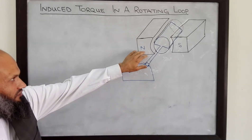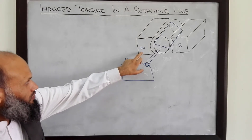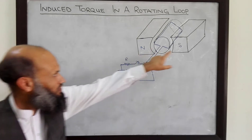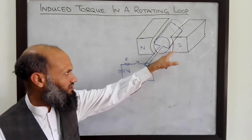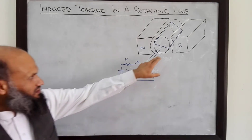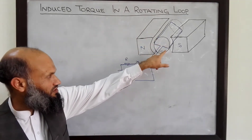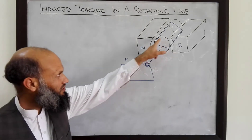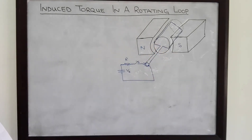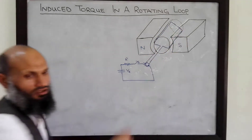This arrangement consists of a magnetic field created by curved poles. Here is the north pole and south pole. The pole faces are not flat; rather these are curved. Inside these pole faces there is a rotor made up of ferromagnetic material. It is a cylindrical rotor, and on this cylindrical rotor we have placed a rectangular coil.